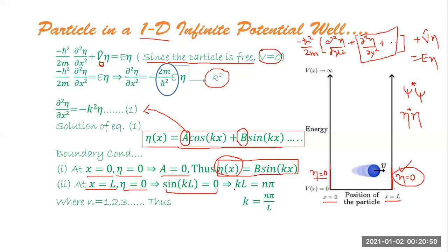sin(kL) = 0 when kL = nπ, i.e., k = nπ/L, where n is an integer. The lowest value of n is 1; n cannot be zero because that would make η = 0 everywhere inside the box, which is physically irrelevant — it would mean the particle is not even inside the box. So n takes values 1, 2, 3, … and k = nπ/L.